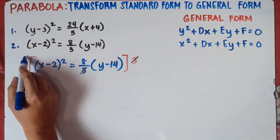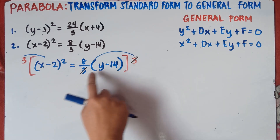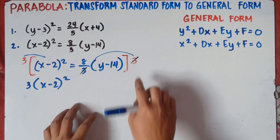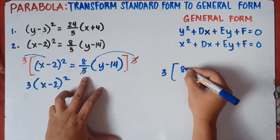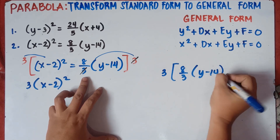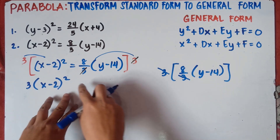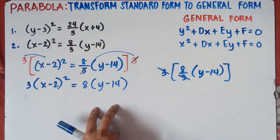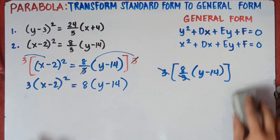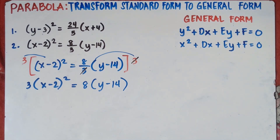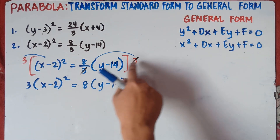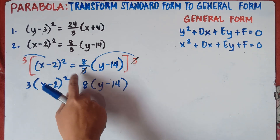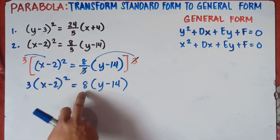The remaining equation after distributing: you multiply and cancel the 3. So this gives us 3(x − 2)² on the left side. On the right side, 3 times (8/3) cancels the 3, leaving 8(y − 14). So you are no longer dealing with fractions, and the equation becomes 3(x − 2)² = 8(y − 14).